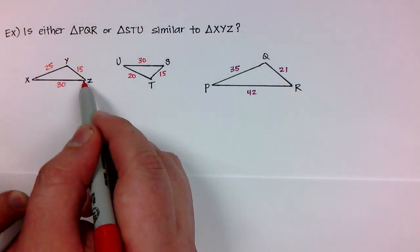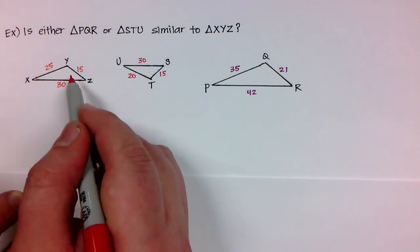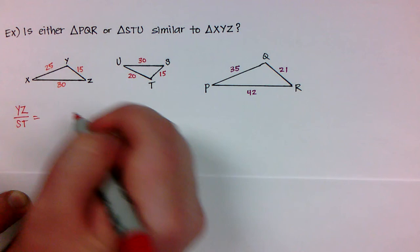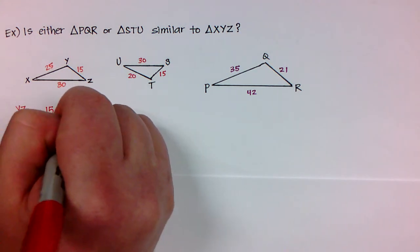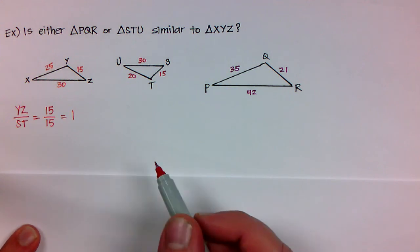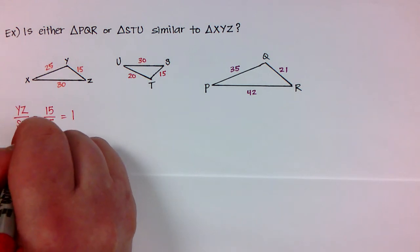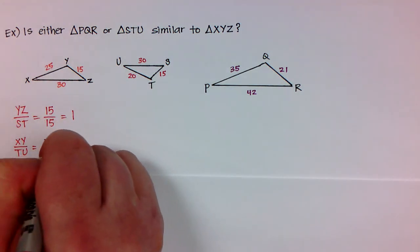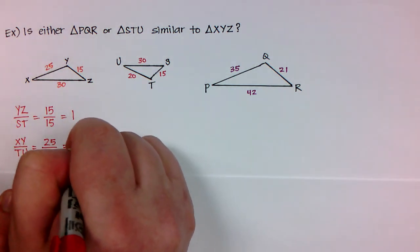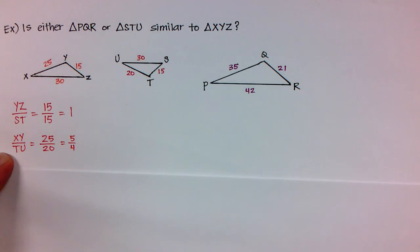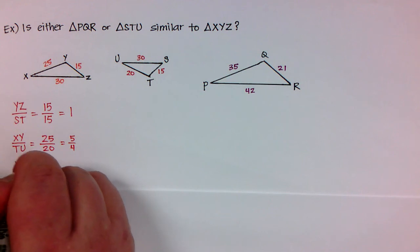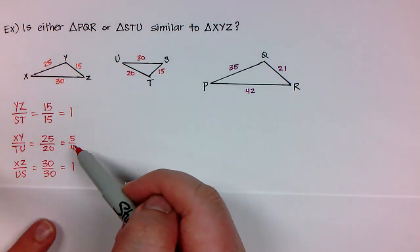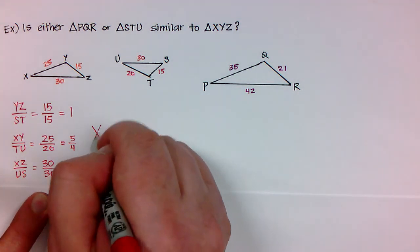So let's start with the shortest side. The shortest side in XYZ looks like YZ. So let's write that down. YZ compared to ST. So that is 15 compared to 15 which is 1. Okay, now let's try the next biggest one. So XY is 25 and TU is 20 and well that just simplifies to 5 fourths. Just for fun let's just see what the longest side would have been. The longest side was XZ compared to US which is 30 and the other one is 30. And that would have been 1. But because this one is 5 over 4 we know that those two triangles are not going to be similar.